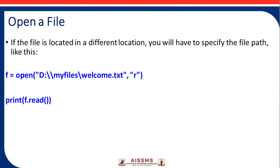If the file is located in a different location, you will have to specify the full path of that file. Then f = open() and here we pass the path of that file, then use the f.read() function for reading.